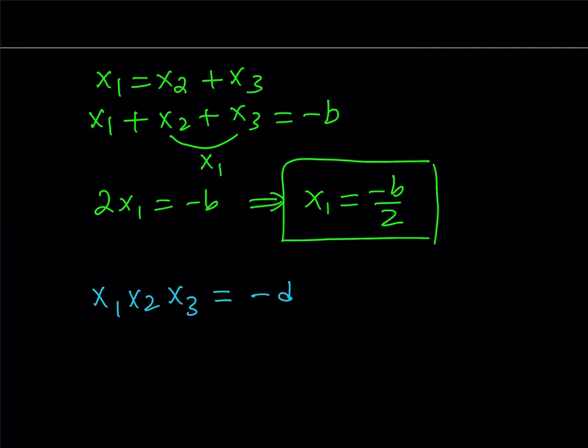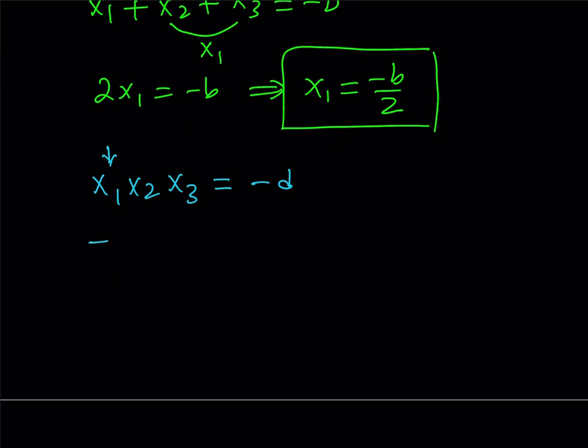Now, what do we know? We know one of the roots is x1, so we can just go ahead and substitute that. If we do, we get negative b over 2 times x2x3 is equal to negative d. Now, if you divide both sides by negative b over 2, then you're going to get x2x3 from here. And that is going to equal 2d over b.